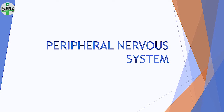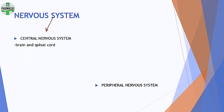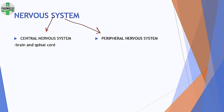Hello everybody, I hope you all are doing well. From this video we will be starting the peripheral nervous system. The counterpart, central nervous system, is in another semester. In this semester we will be just dealing with peripheral nervous system, also known as PNS. The whole nervous system can be divided into two main parts: the central nervous system and the peripheral nervous system.